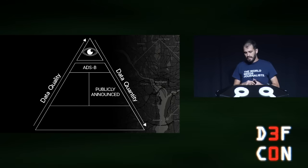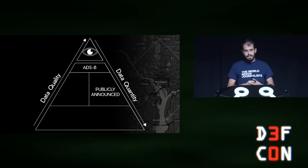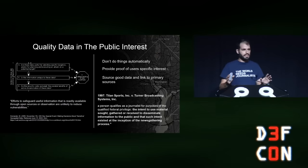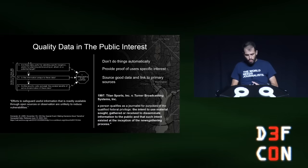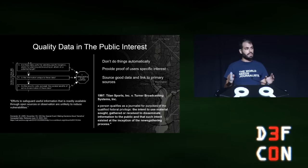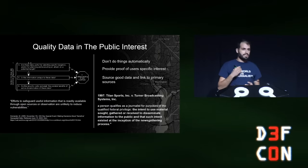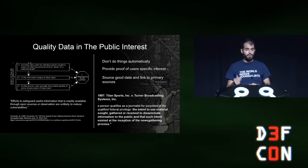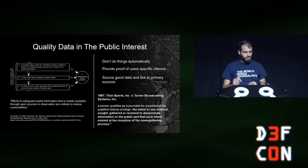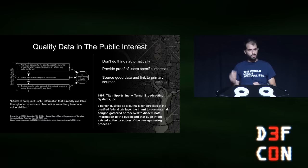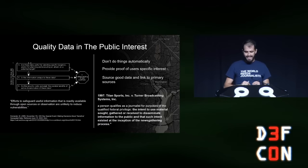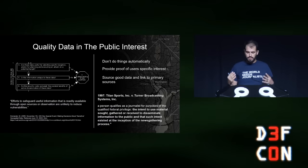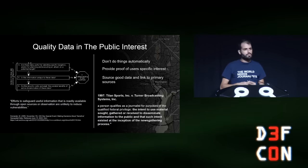This type of tracking what's publicly announced is also useful for things like military night at the local ballpark. When you're surveilling the military, it's good to set some ground rules. In researching this, I relied on a talk by the National Geospatial Programs Office on how they make the decision to redact data from public data sets. They consider first, is this data potentially useful to an adversary? And second, is this data unique, before weighing risks and benefits of redacting it. They note: efforts to safeguard useful information readily available through open sources or observation are unlikely to reduce vulnerabilities. On the other side, we have basic tenets of good journalism: try not to do things automatically, provide proof of user-specific interest whenever possible, thus establishing the public interest, and source good data and link to primary sources whenever possible.